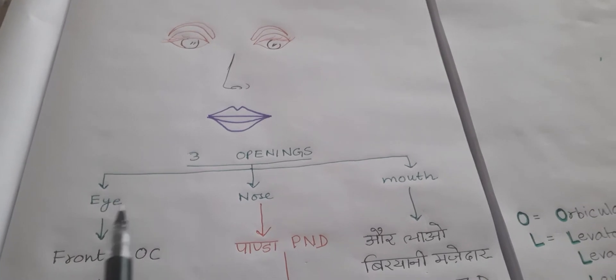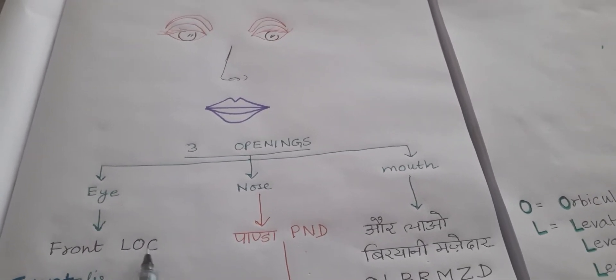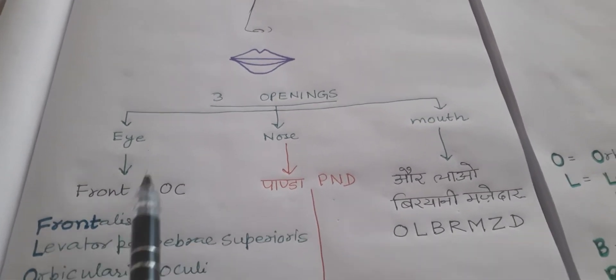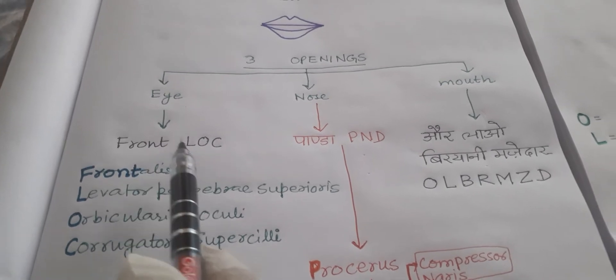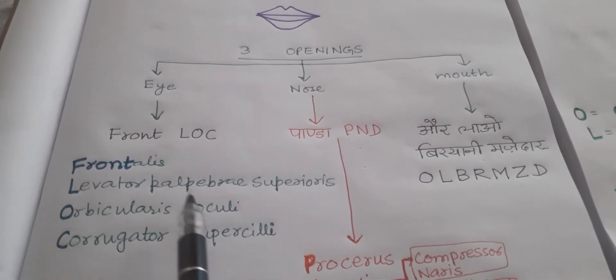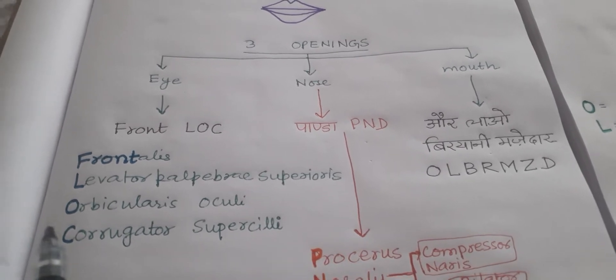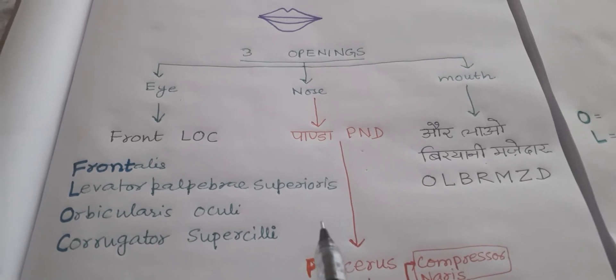The eye works as the soldier which is standing on the front or line of control. So muscles of eye around the eye - it is frontalis, F-L-O-C: F for frontalis, L for levator palpebrae superioris, O for orbicularis oculi, and C for corrugator supercilii.